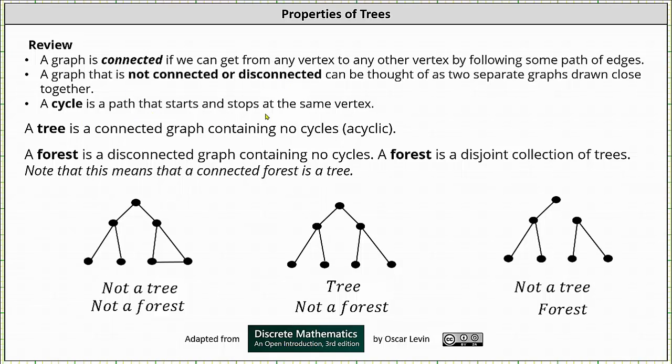A cycle is a path that starts and stops at the same vertex. And now let's define a tree and a forest. A tree is a connected graph containing no cycles. A graph containing no cycles is acyclic.